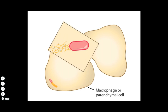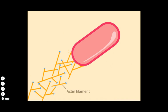The growth of the actin filaments occurs at the interface where the filaments meet the bacterial surface. With the addition of new actin monomers, the filaments get longer and force the cell forward.